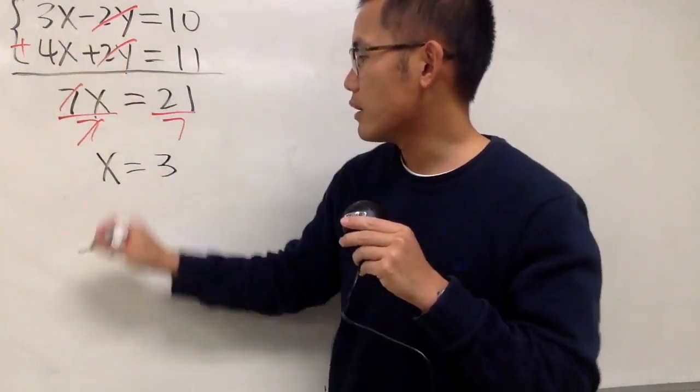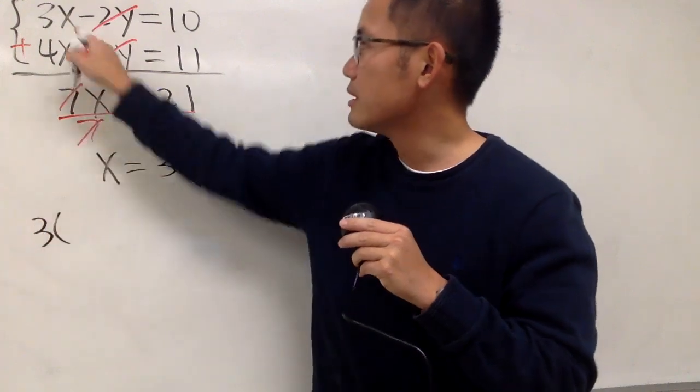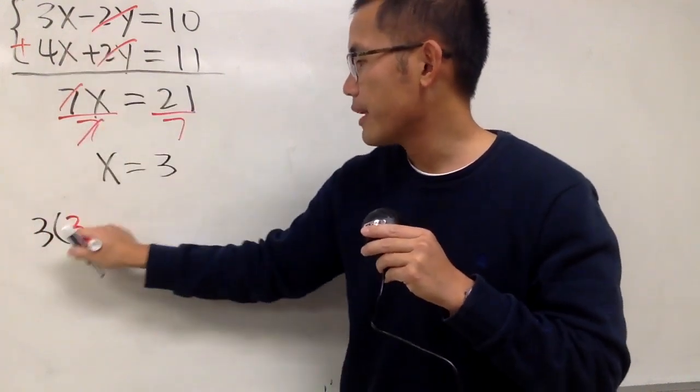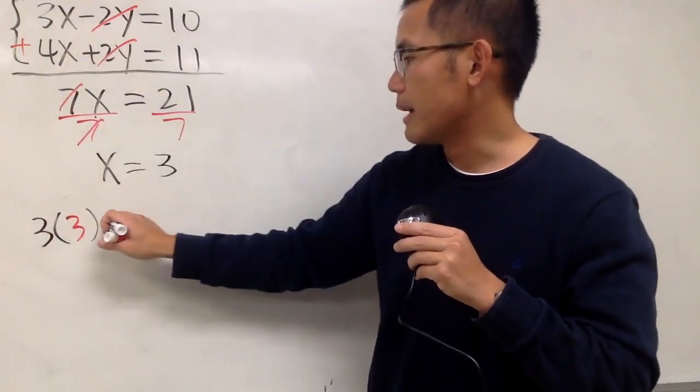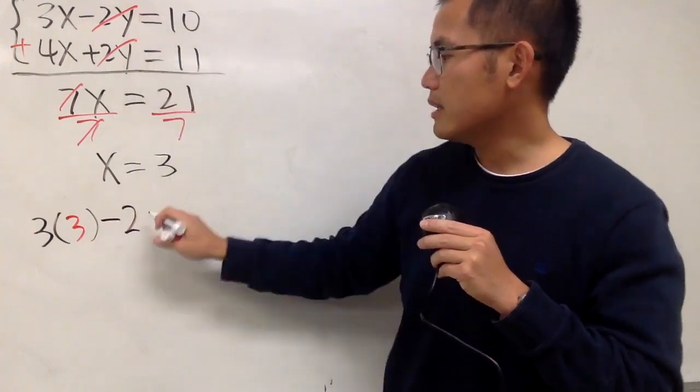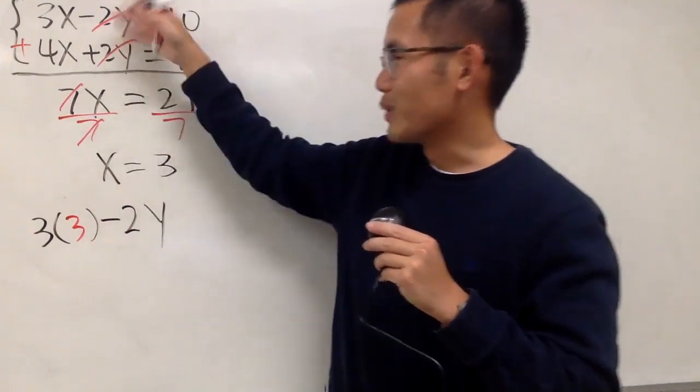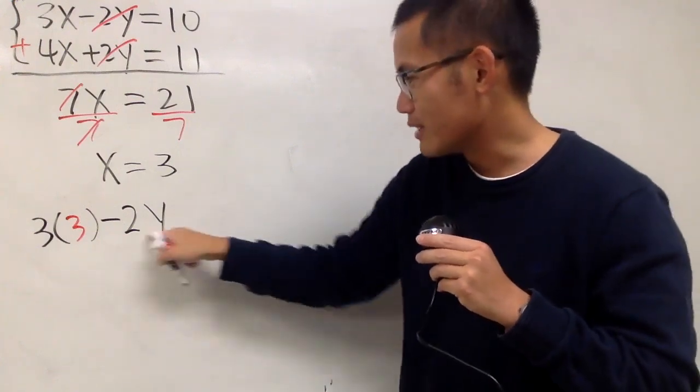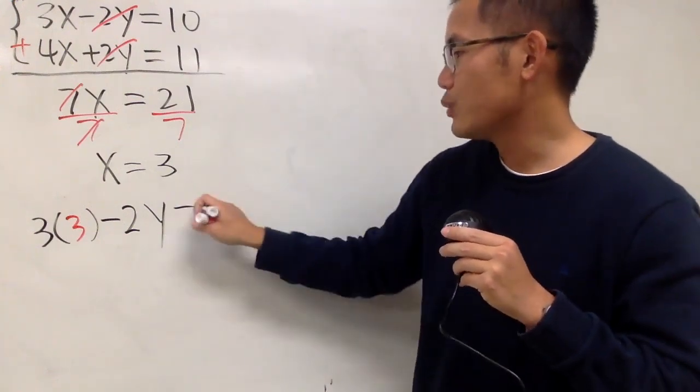So when I put the 3 right here, I will get 3 times x is 3, and that's going to be minus 2y. Again, original, so before we cancel the 2y. So we have the minus 2y right here, and that's equal to 10.